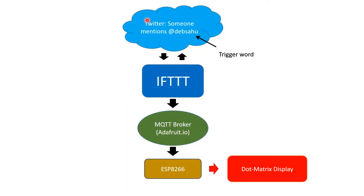We made a video a long time ago where we first polled Twitter for some kind of information. In this case, we were looking for a trigger word that was pulled by IFTTT every 15 minutes or so. And if there is a new message, it puts it onto the MQTT broker, in our case at a fruit. And that message is subscribed on ESP8266 and displayed on a dot matrix display.